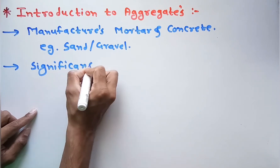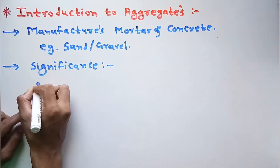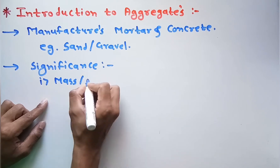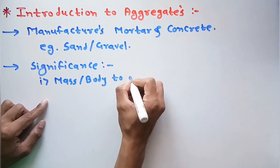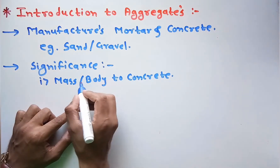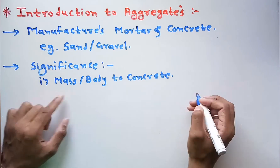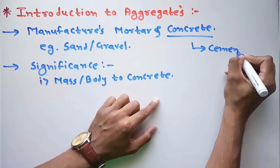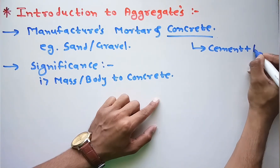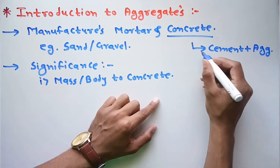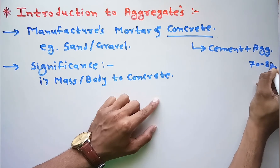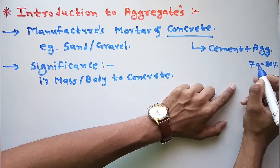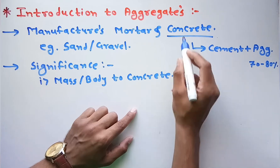The first significance of aggregates in mortar and concrete is that it gives mass or body to the concrete. As we know, concrete is made up of cement, sand, and aggregates. In the whole concrete, aggregates are around 70 to 80 percent. Since aggregates are in huge or bulk quantity, the whole concrete becomes densified.